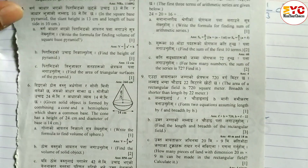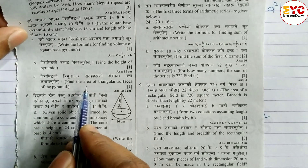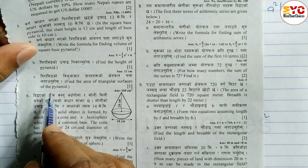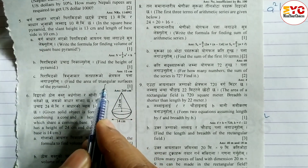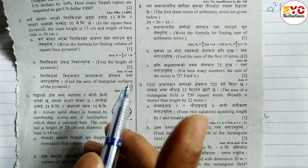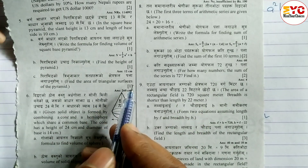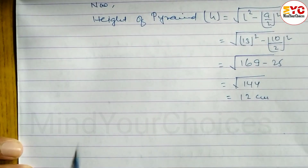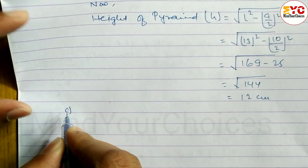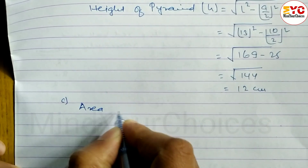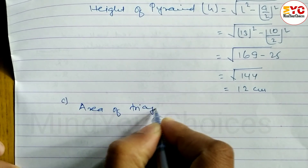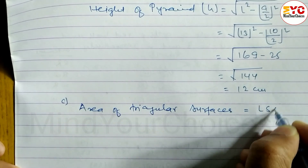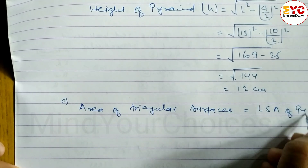Now look at the question — find the area of triangular surfaces of the pyramid, meaning the lateral surface area. There are four triangular surfaces, so we need to find the area of all four triangular surfaces. Area of triangular surfaces equals the LSA of the pyramid.